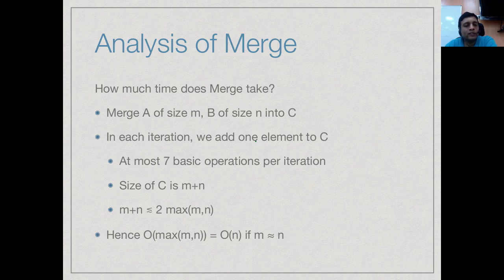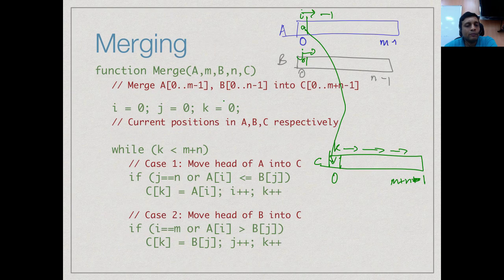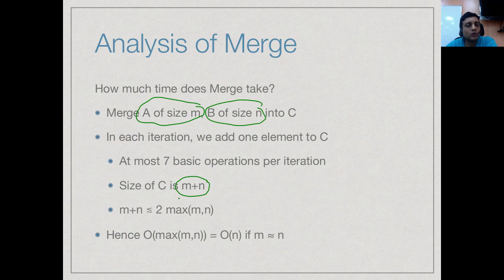In each iteration of the loop, one element gets added to C — either in one branch or the other — so k is incremented each time. The size of C is exactly m+n, so there are m+n iterations. In each iteration there are a constant number of steps — no more than seven — regardless of which branch we take. So we have m+n iterations each with a constant number of steps, giving overall O(m+n) steps. Since m+n is bounded by two times the maximum of m and n, we can say this takes O(max(m, n)).